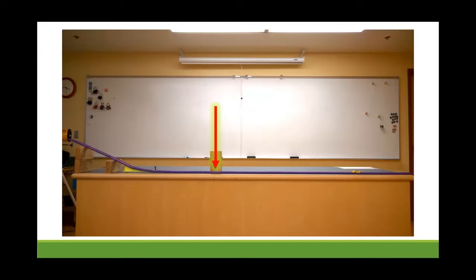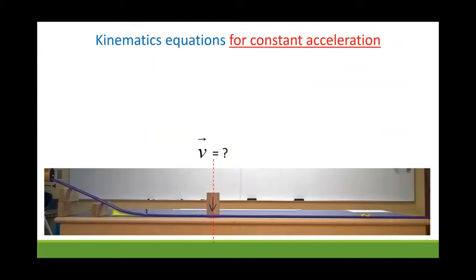Well, velocity is a kinematics quantity. Perhaps we can solve this problem using one of our kinematics equations. We're looking for the velocity at the marked point. But these are kinematics equations for constant acceleration. And our car is not undergoing constant acceleration.